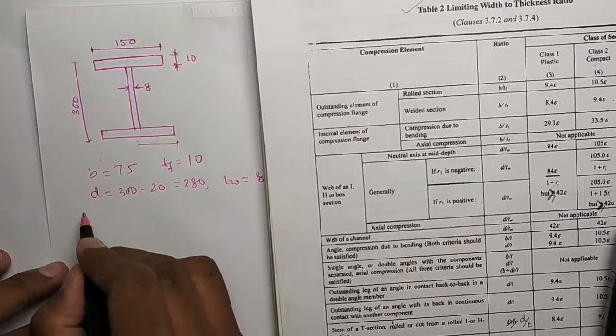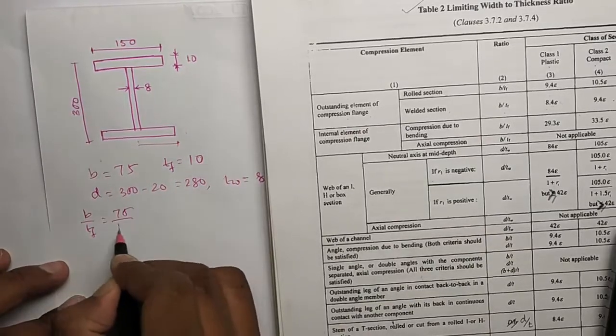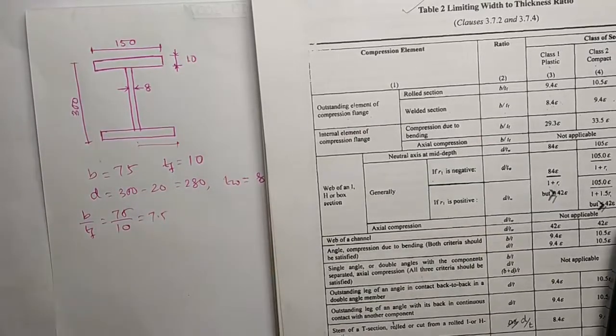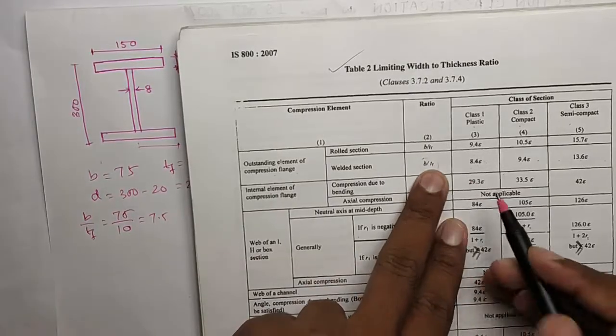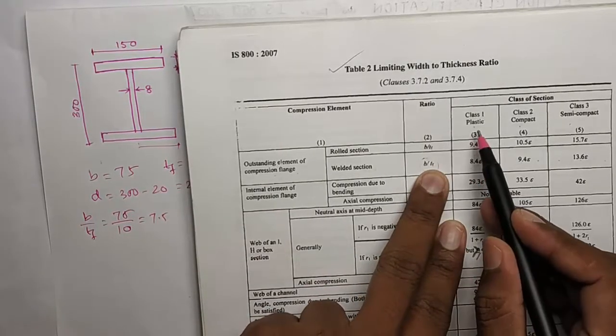You see for flange and welded section, this B by TF. So B by TF, 75 by 10, is 7.5. In this table you see if your this value is less than this value, then it is plastic section.